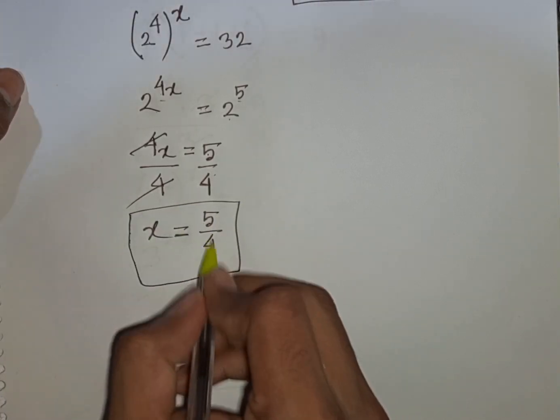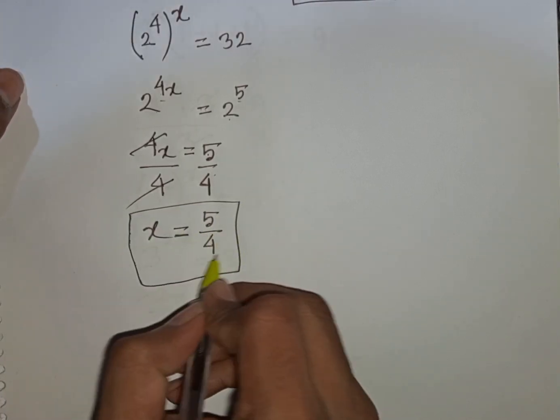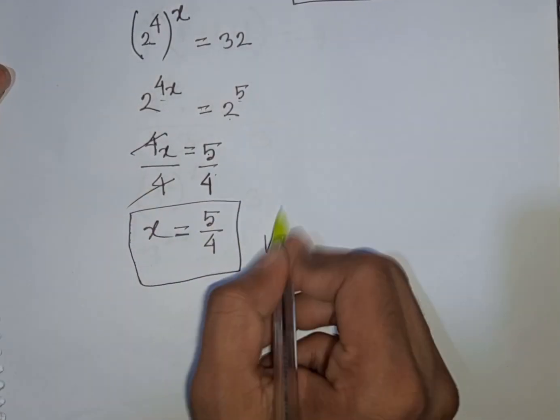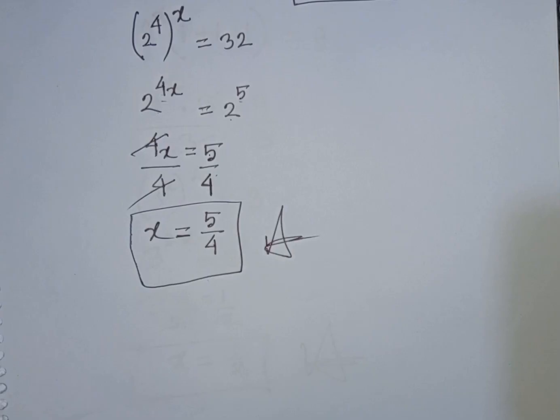So 5 over 4 is the value of x. This is our final answer.